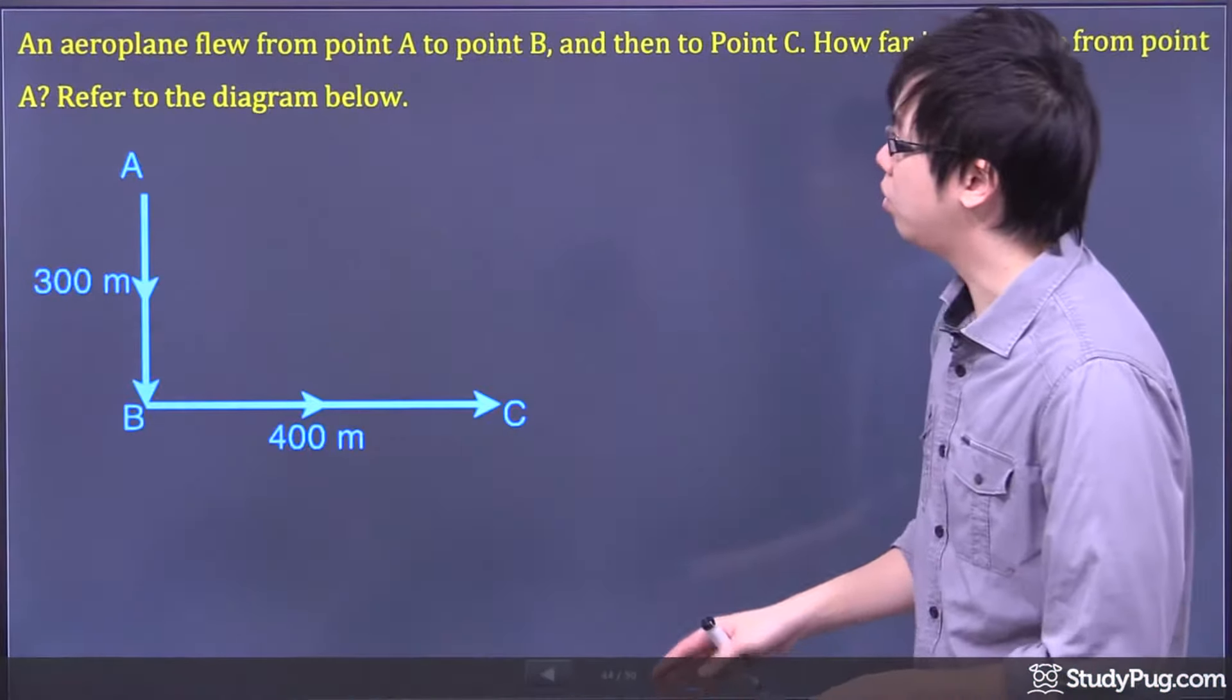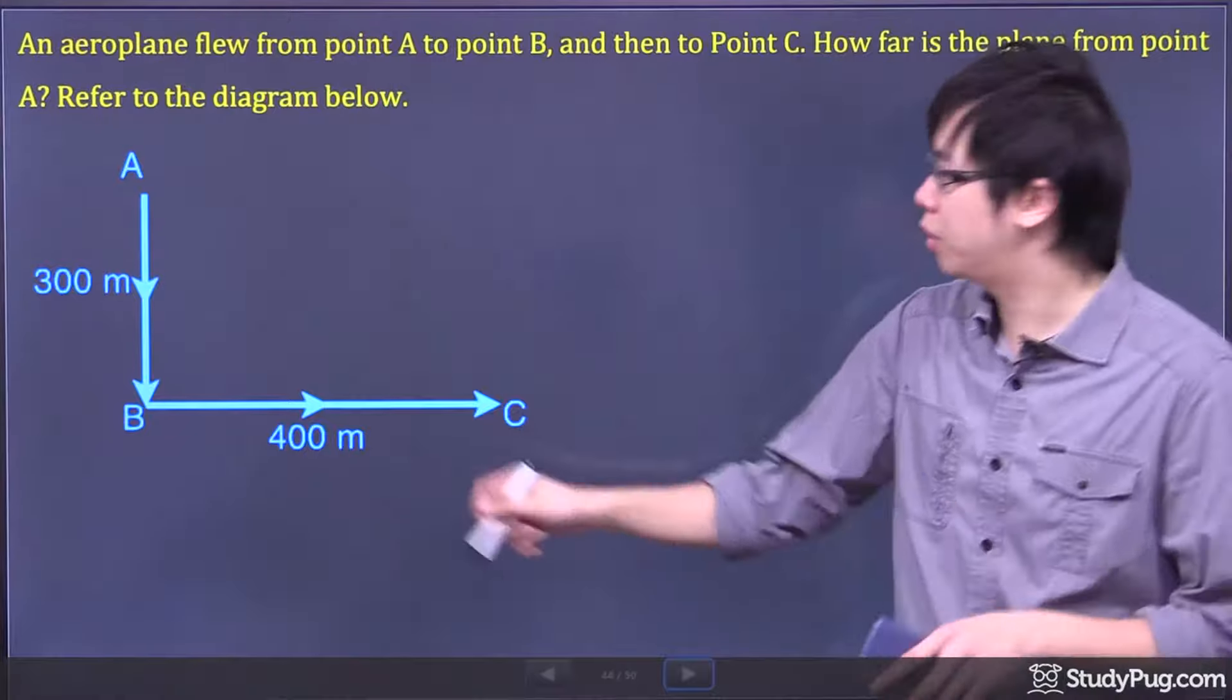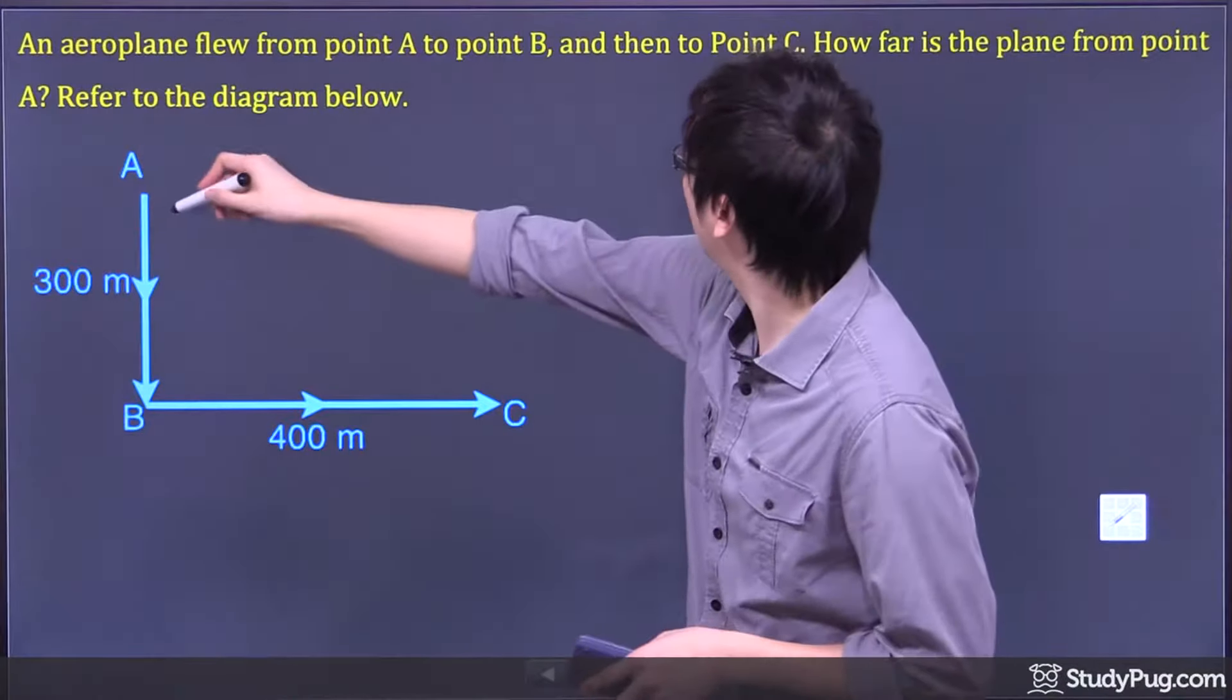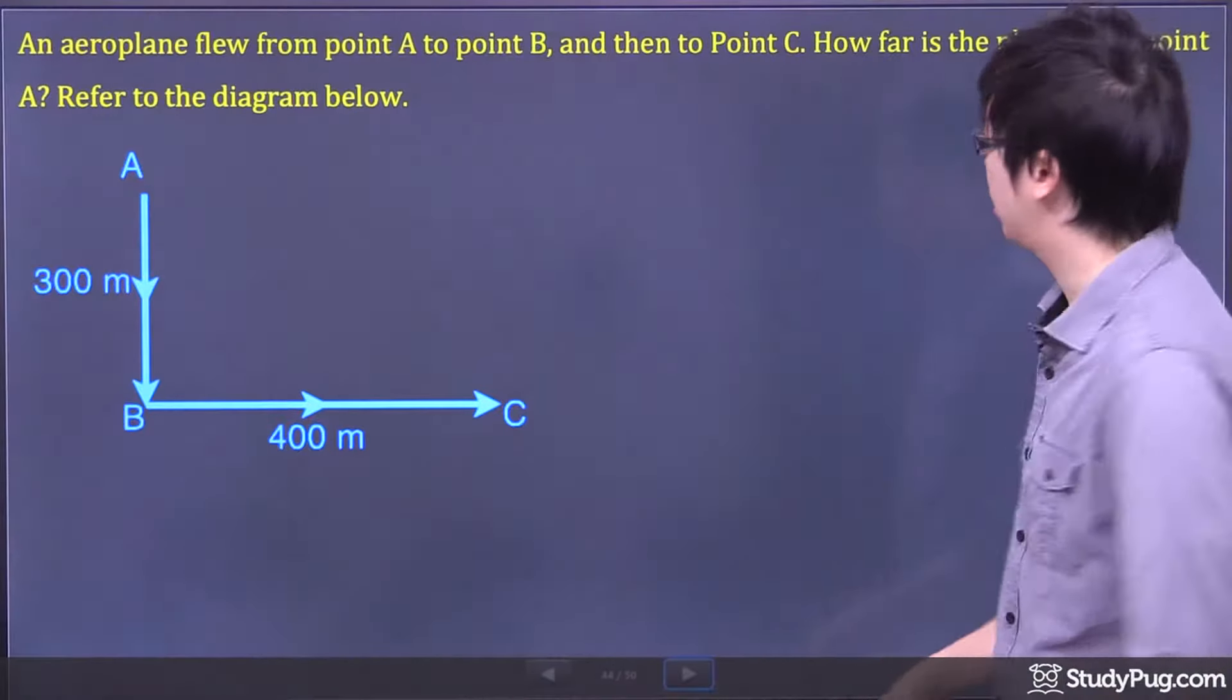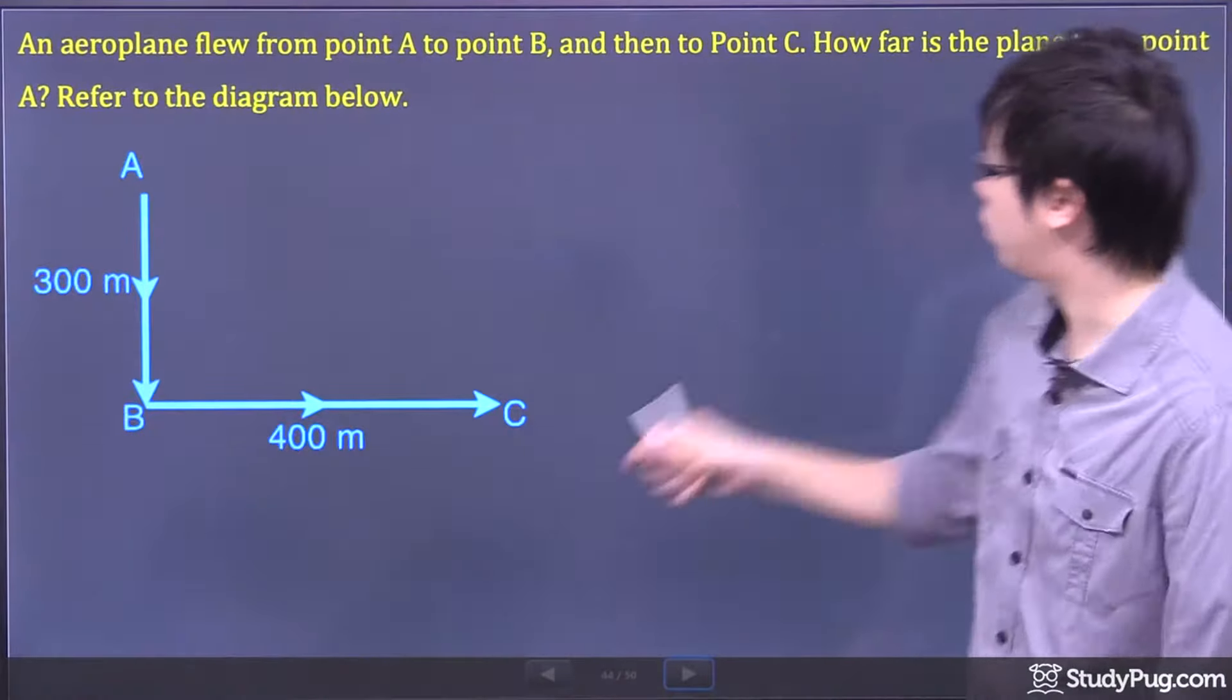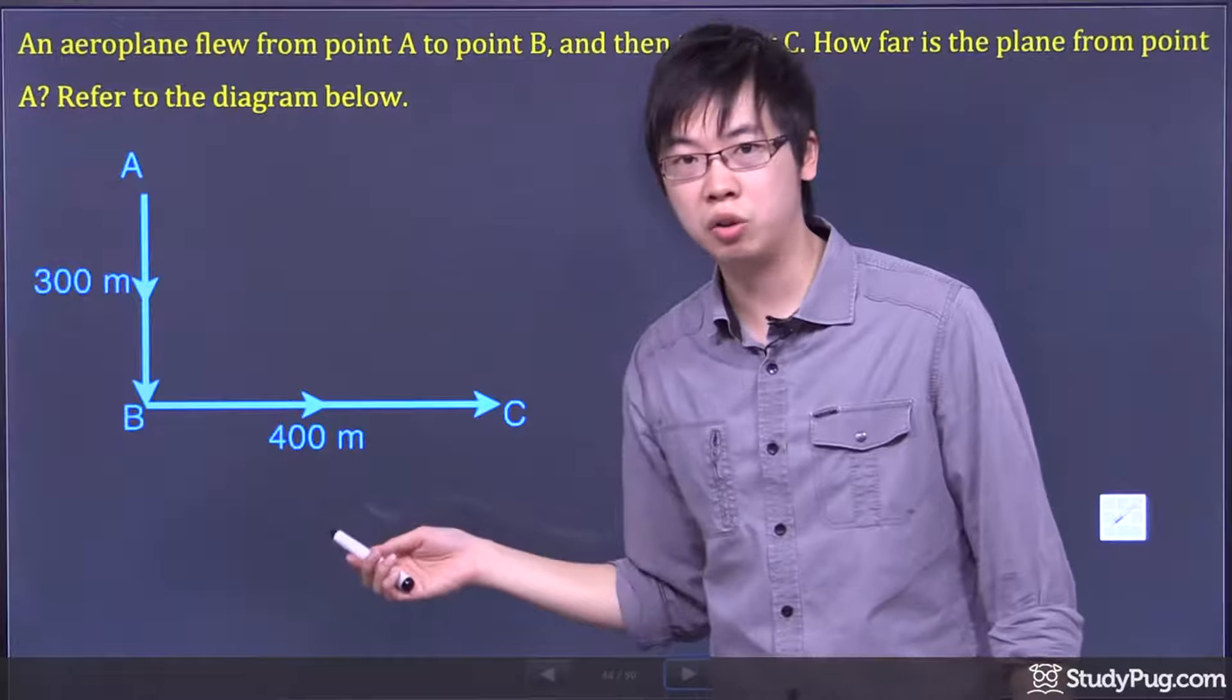Hi, welcome to this question right here. We got a plane that flew from point A starting from here. It went to point B for 300 meters. Then for some reason it took a 90-degree turn and went to point C for another 400 meters.